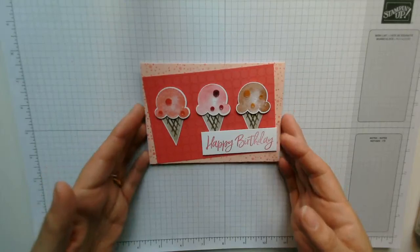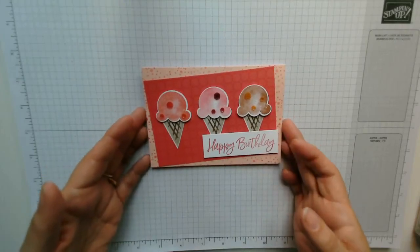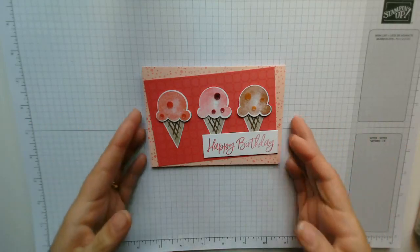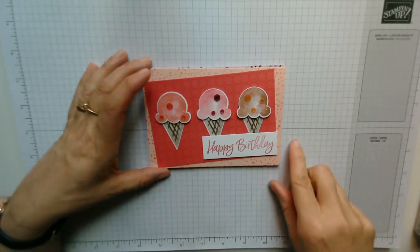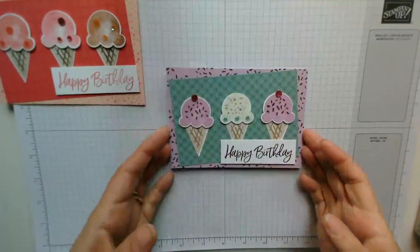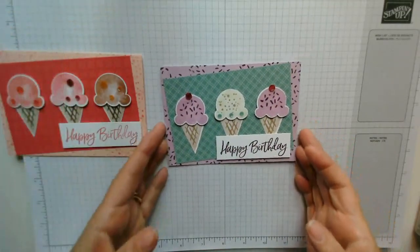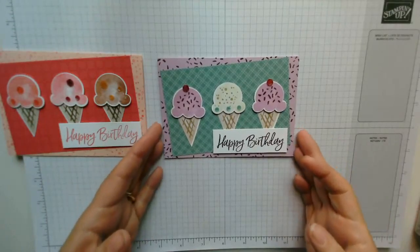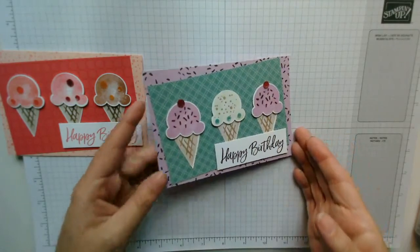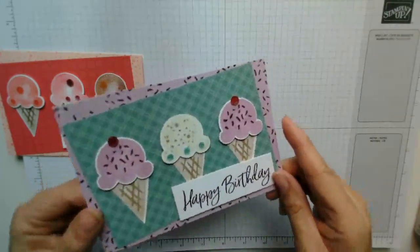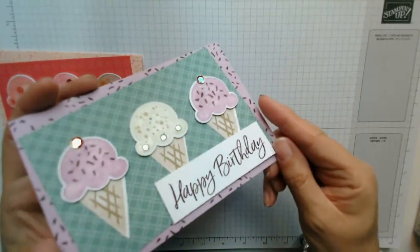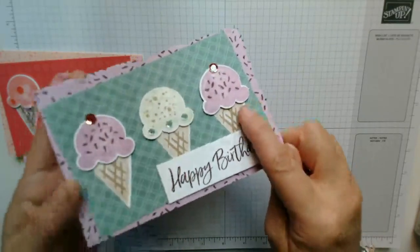Now I have to say as soon as I saw this stamp set in the catalogue I knew it was something I would be purchasing. So this is the first version which is very similar to the one in the catalogue, and then I have a second version which I think I've blinged up a bit. I put Wink of Stella on the three ice creams so that they twinkle. Now I'm hoping if I fold the card slightly to an angle you might be able to see it.